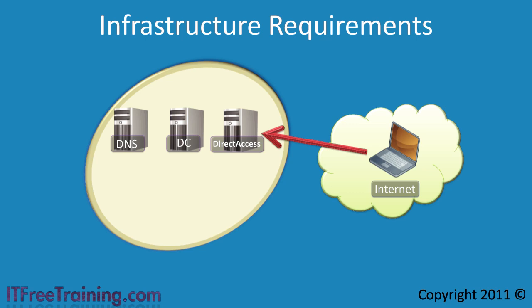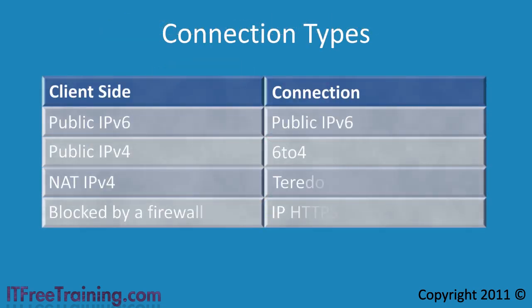If the client is using a public IP version 6 address it will connect directly to the direct access server over the IP version 6 network. If the client is using an IP version 4 address it will attempt a 6-to-4 connection. Since 6-to-4 does not support NAT, if you are behind a NAT device direct access will then use Teredo, which can travel over IP version 4 NAT devices. Lastly, if all else fails — perhaps you are behind a firewall — direct access will attempt to use IP HTTPS to make the connection.